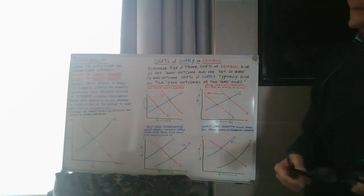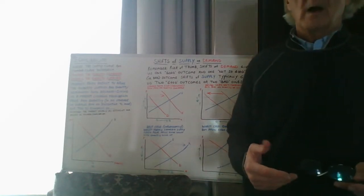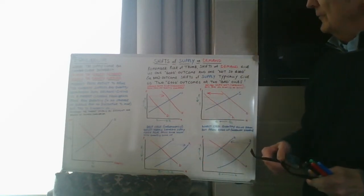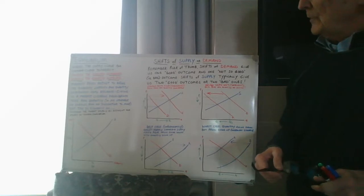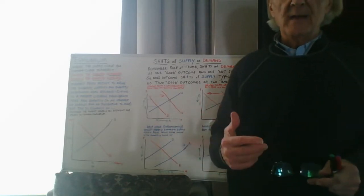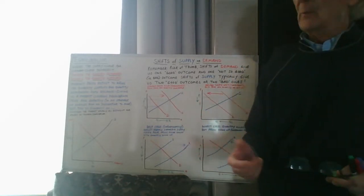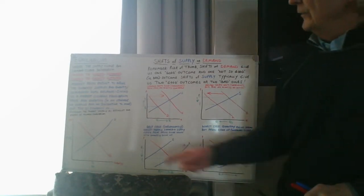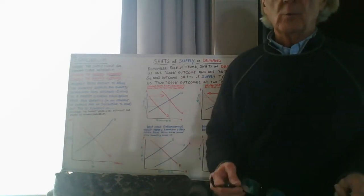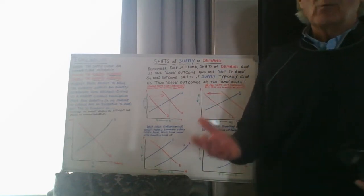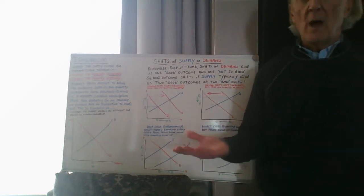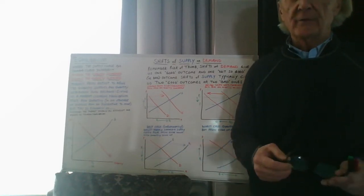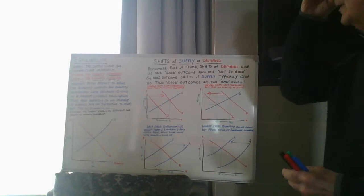Now we can have a movement along or a shift, but first let's talk about bringing the supply and demand curve together. When we bring the supply and demand curve together, where they intersect is called equilibrium — equal, balanced. What is equal and balanced? The quantity demanded and the quantity supplied are in balance. That's equilibrium.